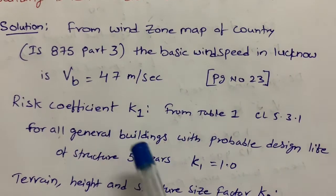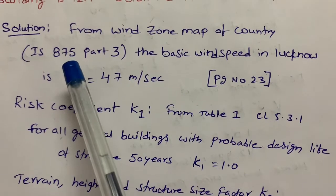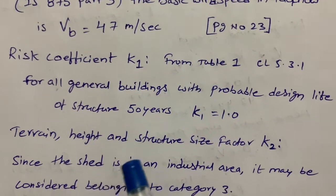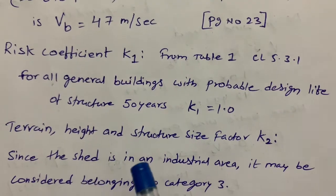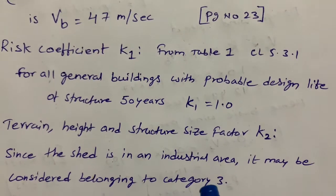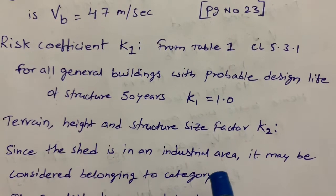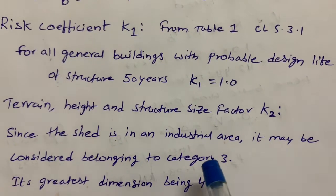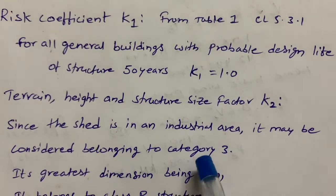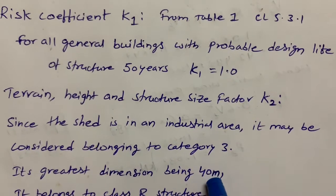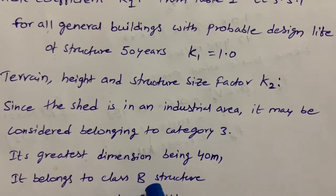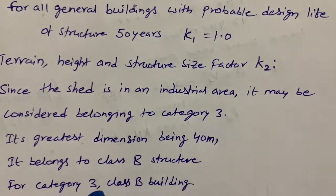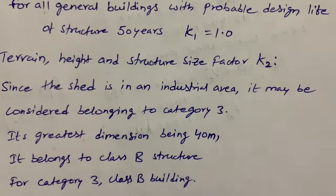Next we need to calculate K2, which is the terrain factor. Here the shed is in an industrial area, it may be considered belonging to category 3. Its greatest dimension being 40m, it belongs to Class B structure. For category 3, Class B building, the code is specifying that...